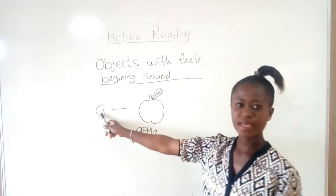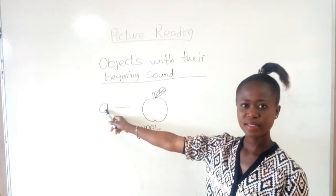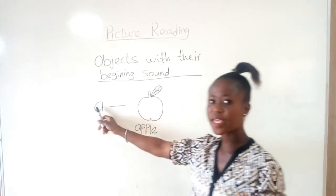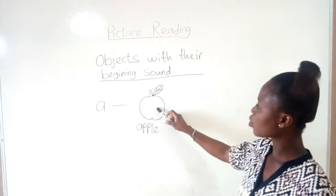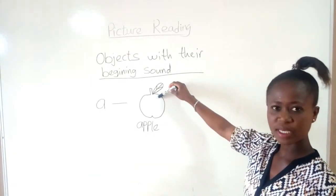This letter is letter A. It's part of the alphabet and we have this here. Hope you know this object. It's an apple.